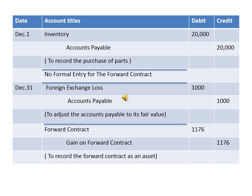By the end of the year, we need to record the foreign exchange loss and the gain on the forward contract. So we need to record two entries in our journal: the first related to accounts payable, and the second related to the forward contract.